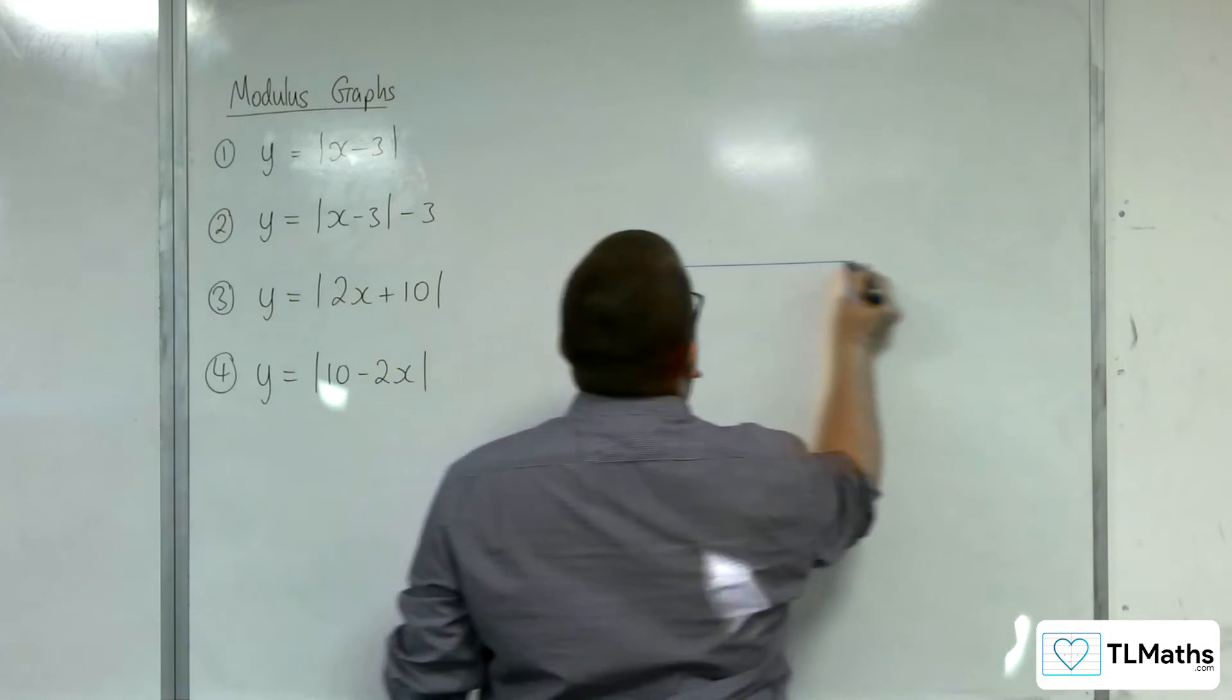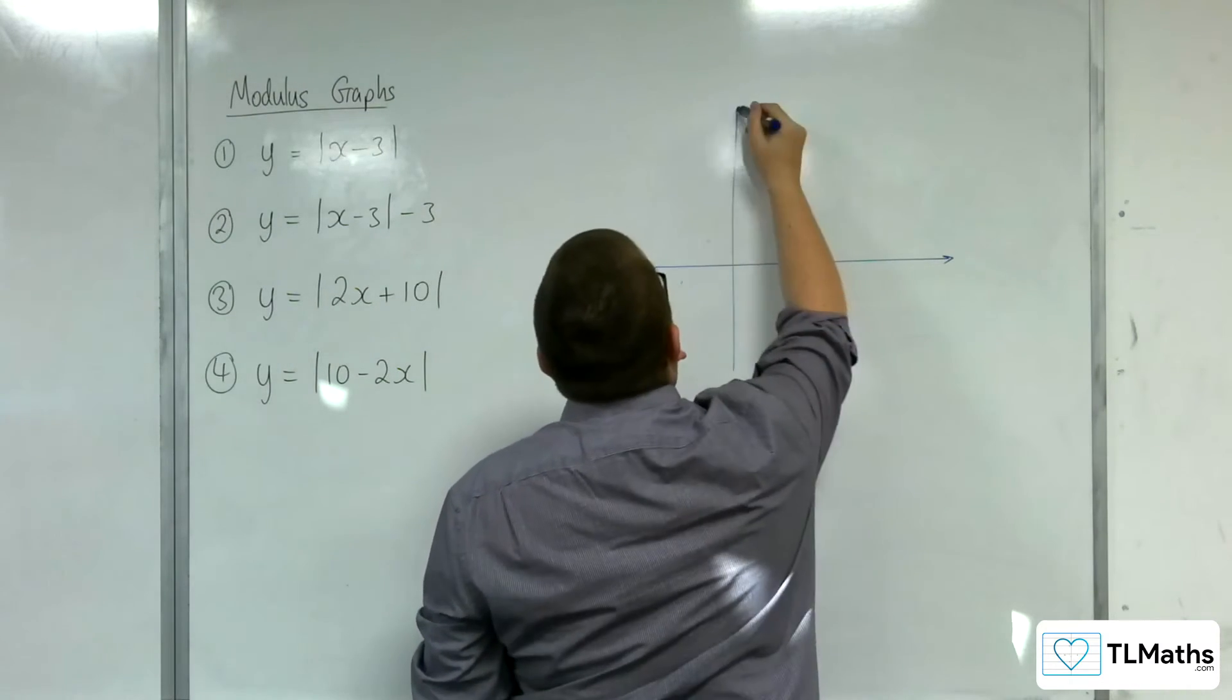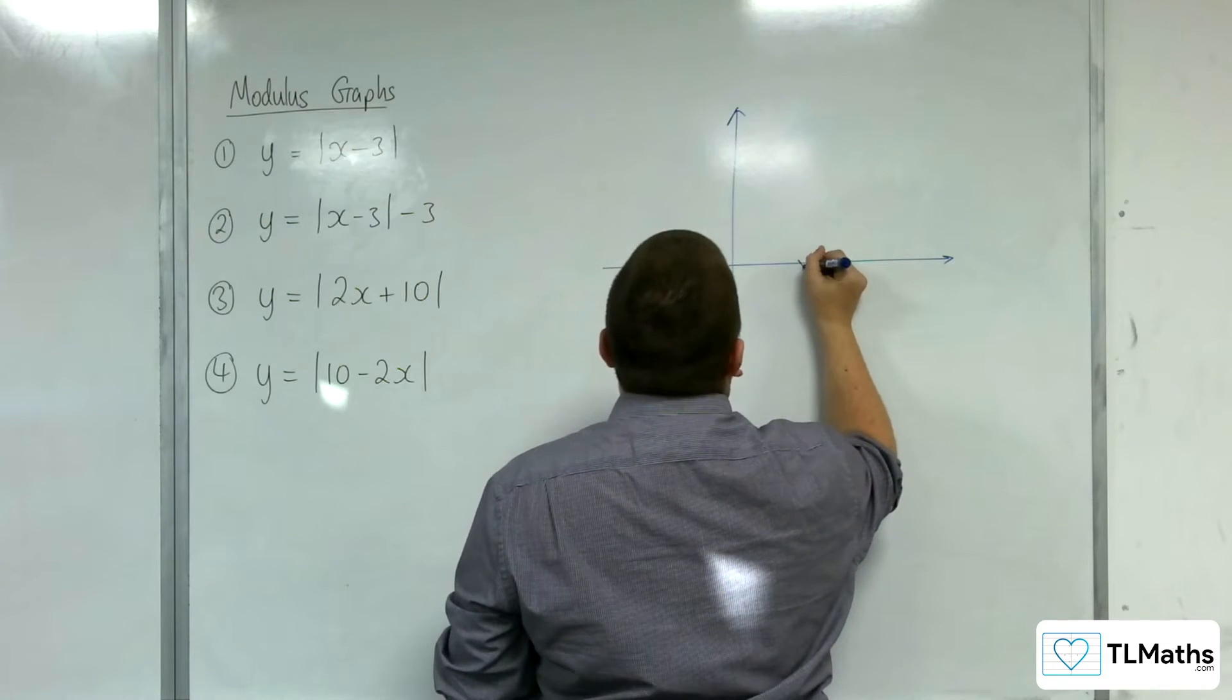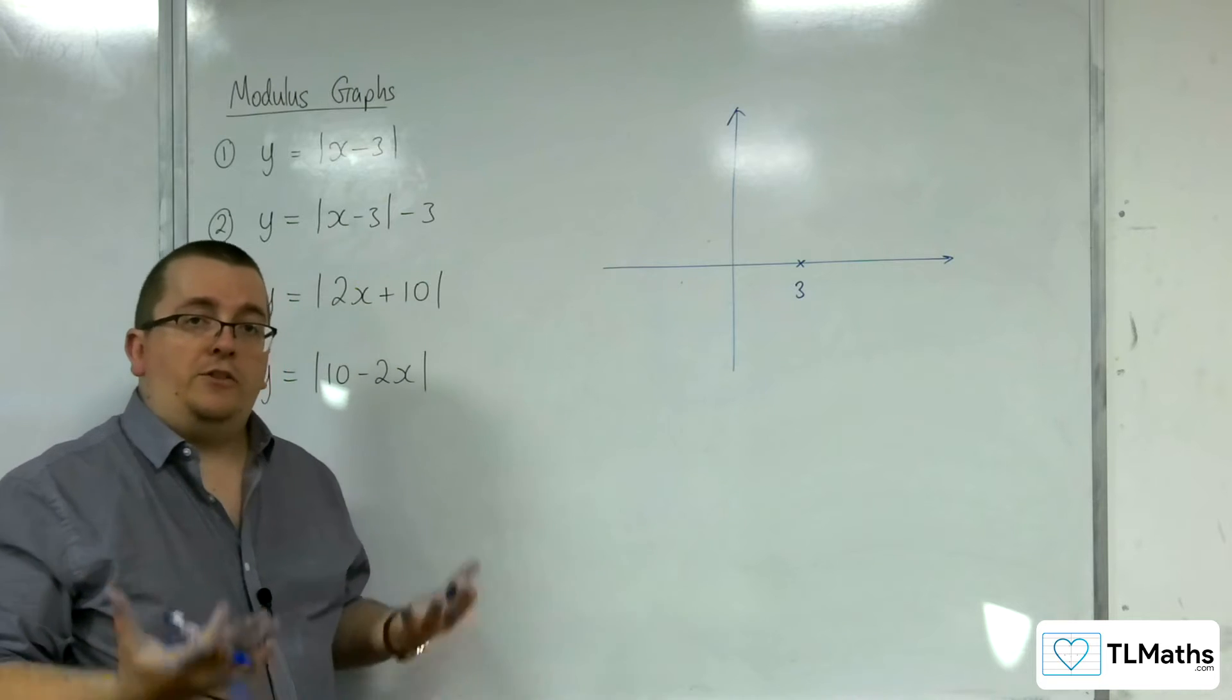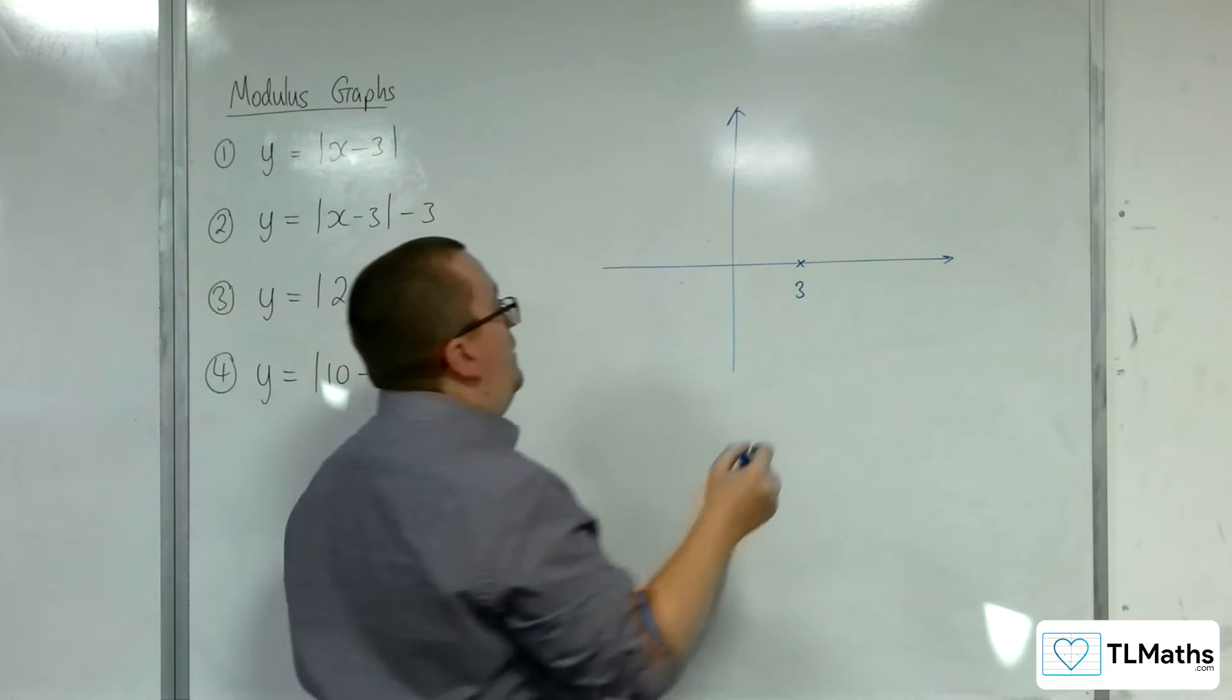So, for number 1 here, the vertex is at (3, 0), in exactly the same way as you would identify the vertex of a parabola in completed square form.